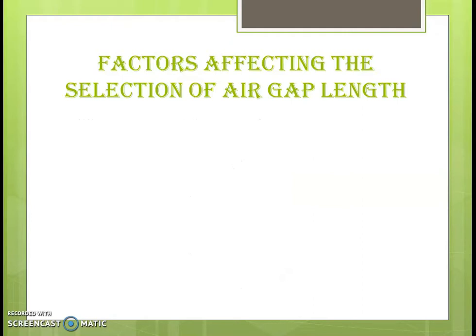The next factor affecting the selection of the air gap length is overload capacity. When we keep a larger air gap length, the variation in reluctance between the air gap due to the slotting effect will decrease, and leakage reactance will decrease. When leakage reactance decreases, the diameter of the circle diagram will increase and the overload capacity of the three-phase induction motor will increase. So for higher overload capacity, we require more air gap length.